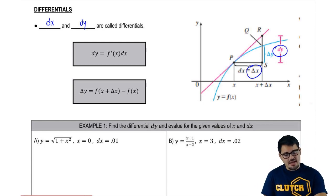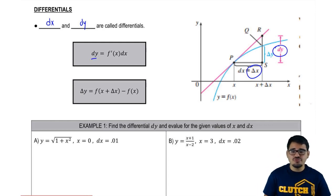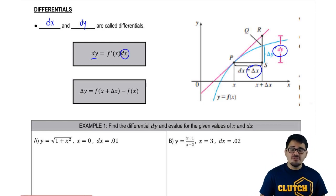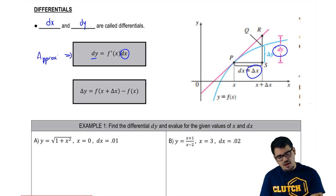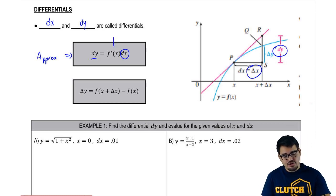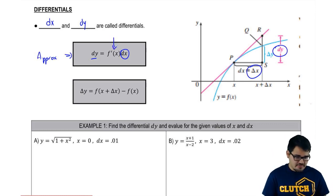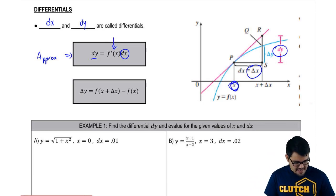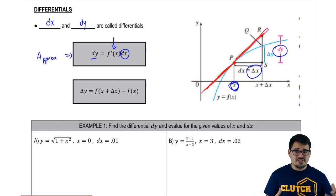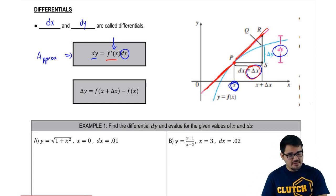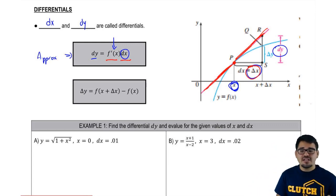So whenever we have dy equal to f prime of x times dx, that means we're going to use dx, the differential of x, to get our change in y. This is actually an approximation of our change in y using our change in x and our derivative. Our derivative in this case is the slope of the line tangent at x. So we're multiplying the slope of the line tangent times the change in x to approximate our change in y.